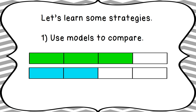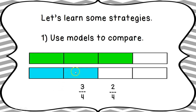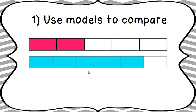Now let's learn some strategies. The first thing we can do when comparing fractions is use models — we can draw bars or circles, as long as the pieces are equal. In this example we've got two fractions: the first is three-fourths — one, two, three, four pieces all together and one, two, three of them are shaded. The second is two-fourths — four pieces and two are shaded. Looking at the picture, three-fourths is greater than two-fourths because more of it is shaded.